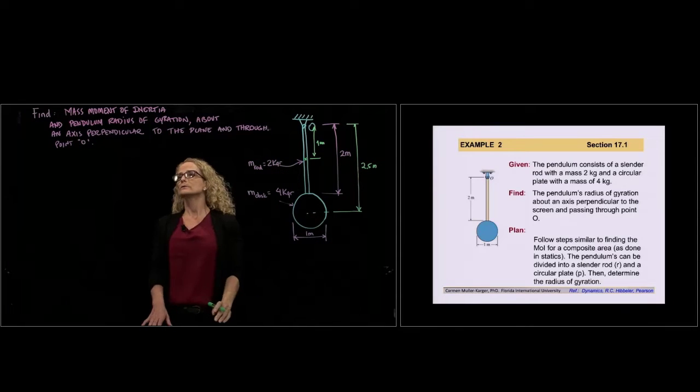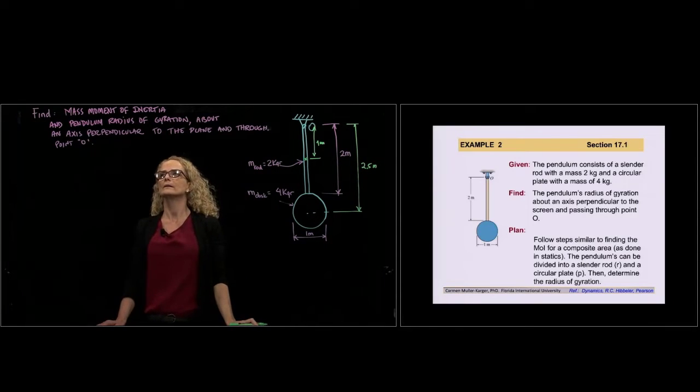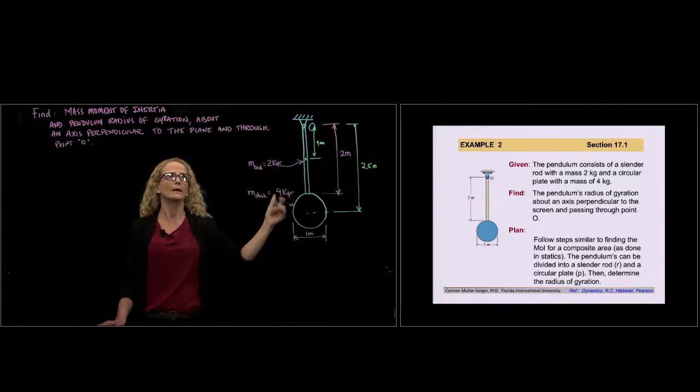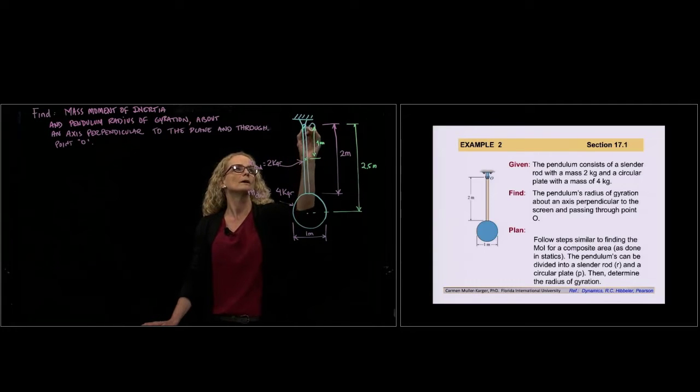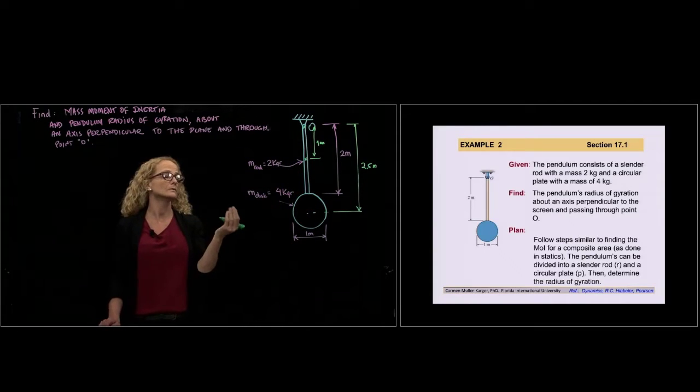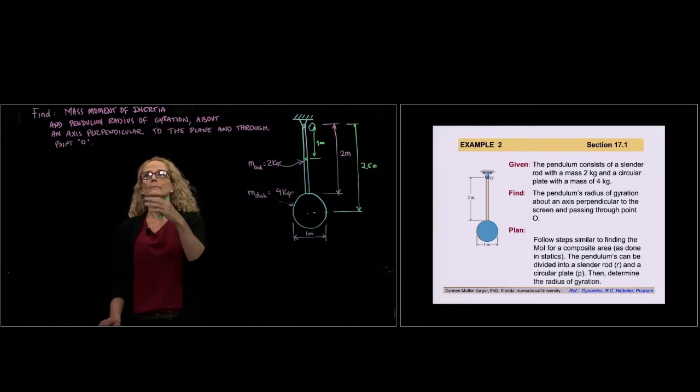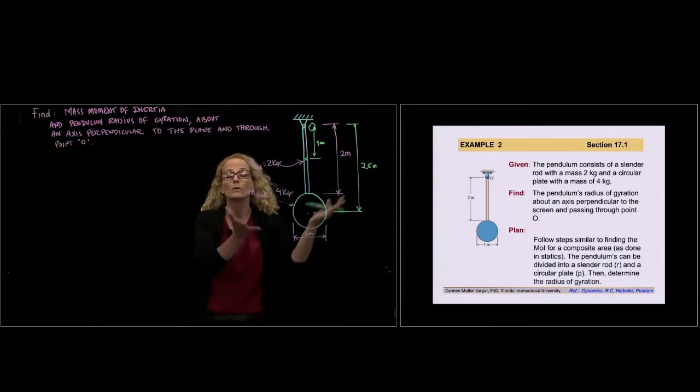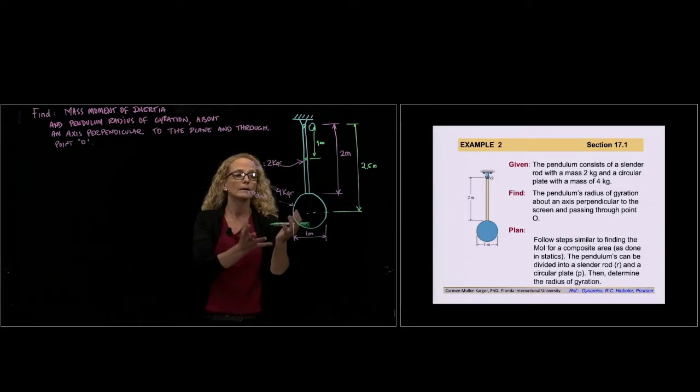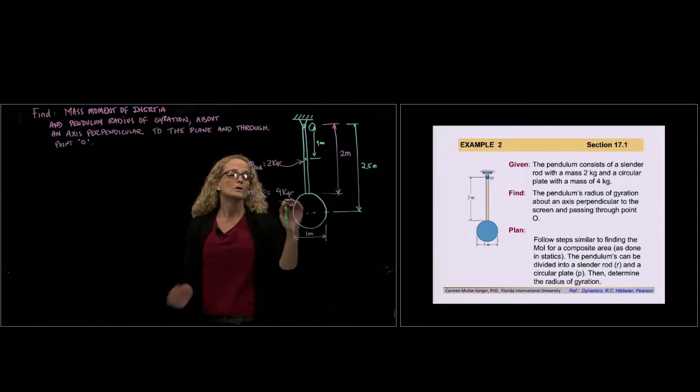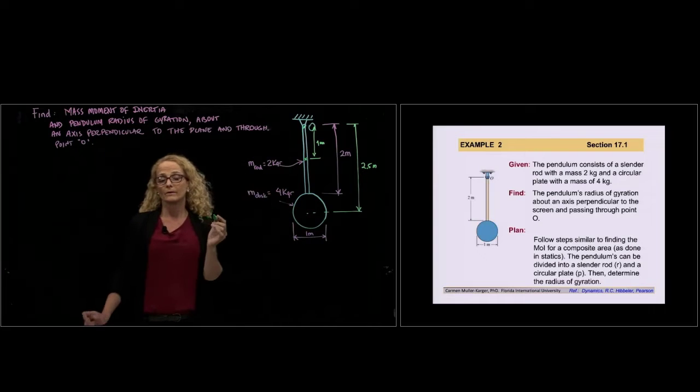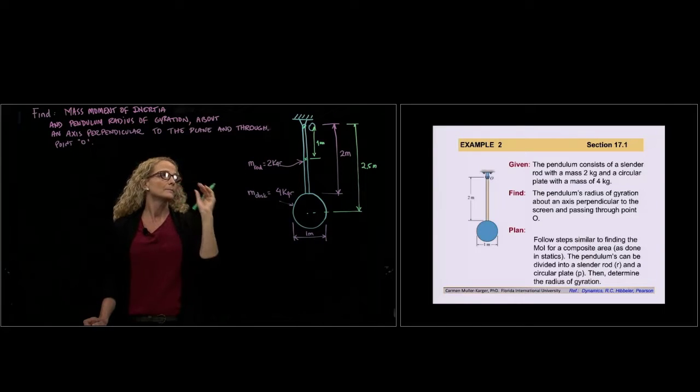And we are asked to find the mass moment of inertia and the pendulum radius of gyration about an axis perpendicular to the plane, and that passes through point O. So be careful because there are some problems that they ask you to find the mass moment of inertia about the center of mass of the whole body. In this case, we are asked to find the moment of inertia about point O. So we have to use the theorem of parallel axis respect to that point O.